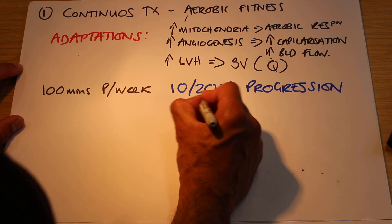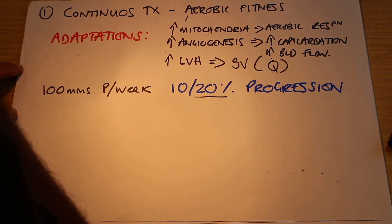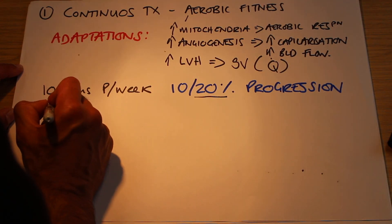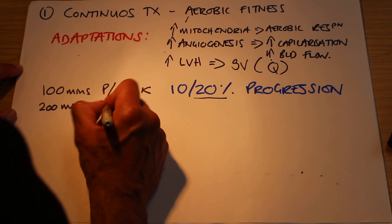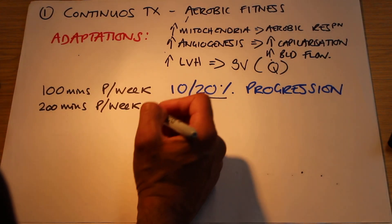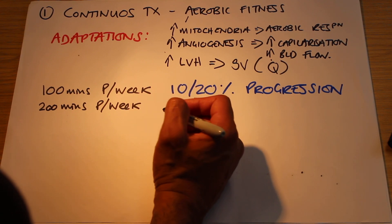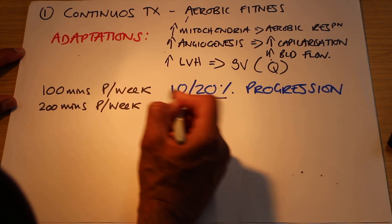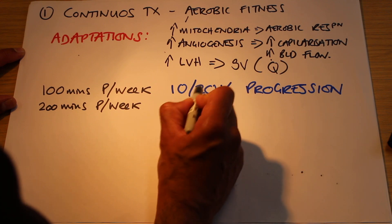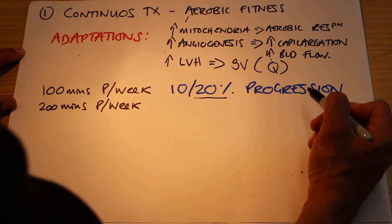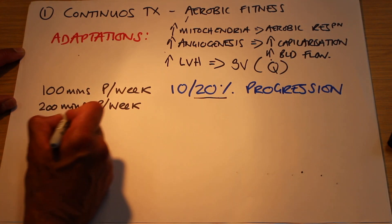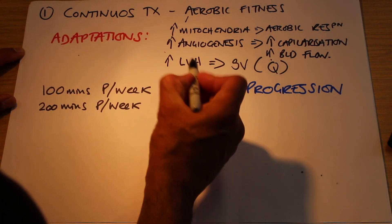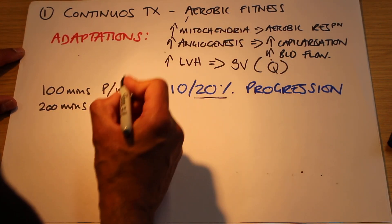Taking the upper limit of 20 percent, if you increase by 20 percent each week from 100 minutes, over four weeks you'd actually be exercising at 200 minutes per week. This would be your general aerobic fitness — running, cycling, rowing, swimming, lots of different sports. By incorporating a 20 percent progression over four weeks, you progress to 200 minutes per week, which is really good for developing aerobic fitness and triggering those physiological adaptations.